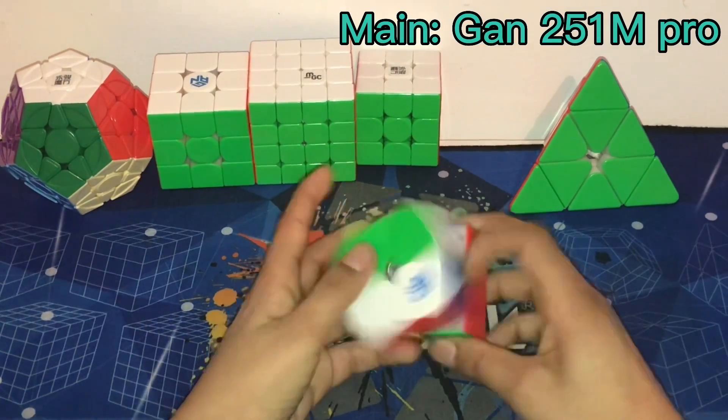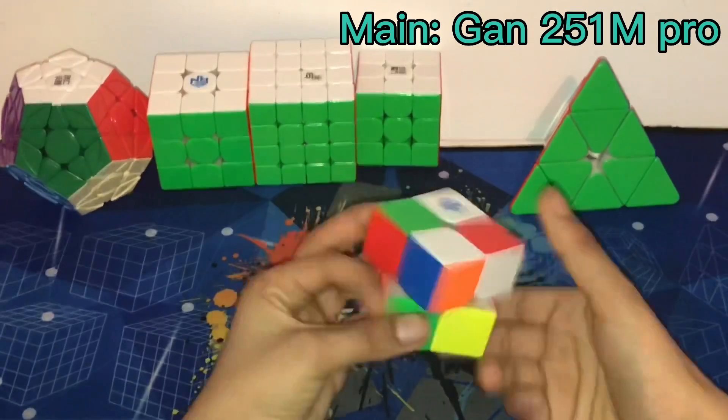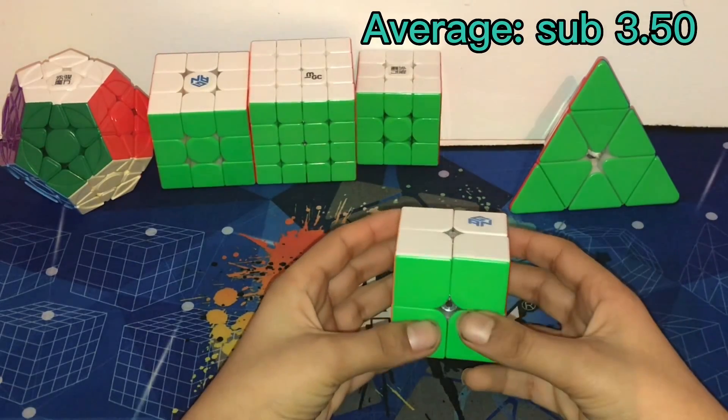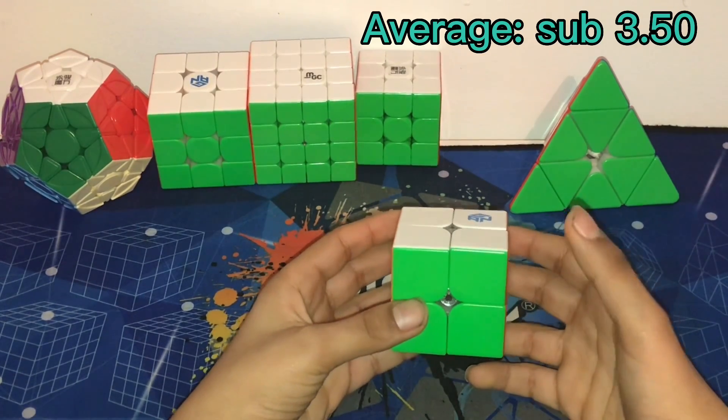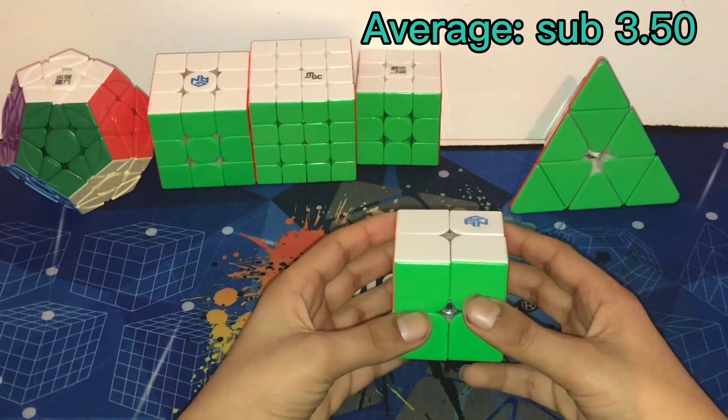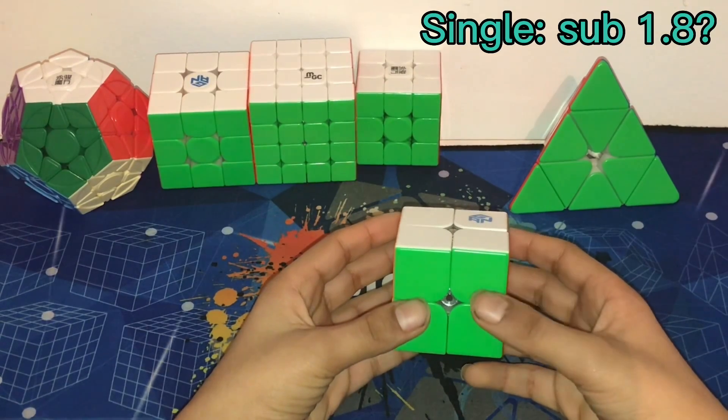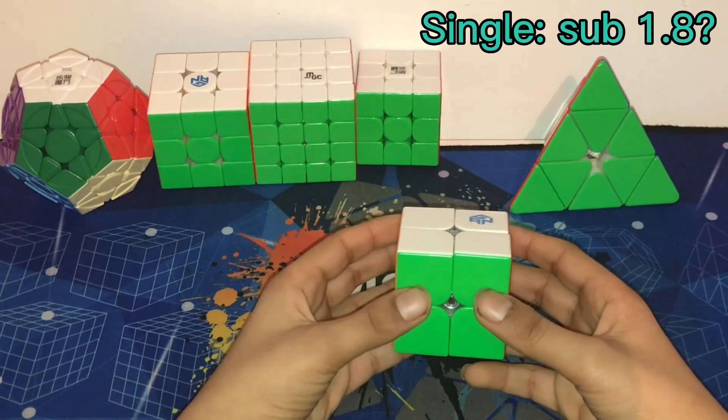We'll start with 2x2. I'm gonna main the GAN 2510 Pro, and I hope to get an average sub 3.50, which is my official PR. I've been wanting this for 4-5 months now, and it's really annoying because at home I can do it almost all the time. For single, I hope to get sub 1.8, but that mostly depends on the scrambles.